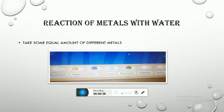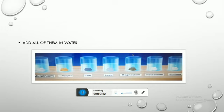Now, take equal amounts of different metals like Aluminium, Copper, Iron, Lead, Magnesium, Potassium and Sodium. Put all of them in equal amounts of cold water. When we put all of them in cold water, they start reacting.